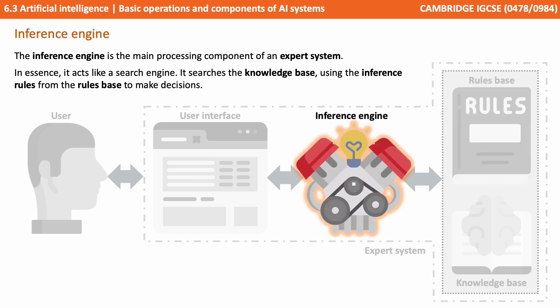And then finally the inference engine. This can be considered the main processing component of an expert system. In essence it acts like a search engine, searching the knowledge base and making use of the inference rules from the rules base in order to come to decisions.